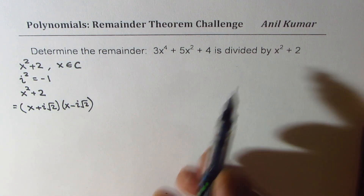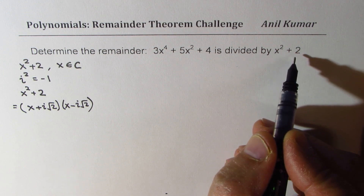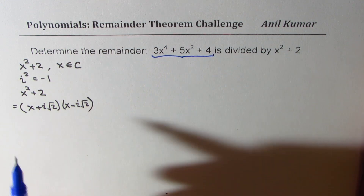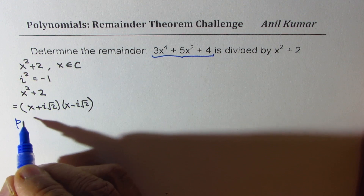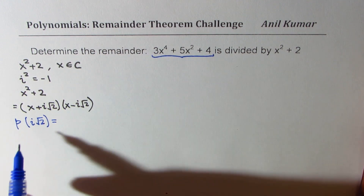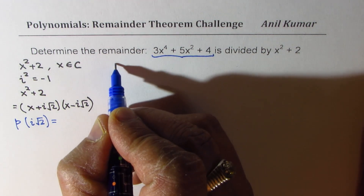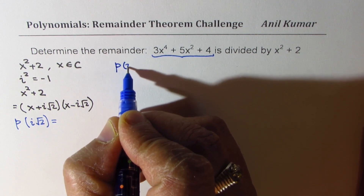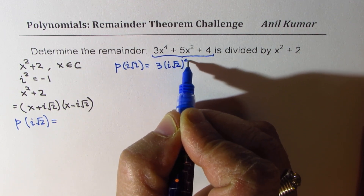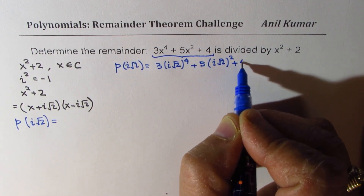So that gives you the key to our solution. These are the two factors of x squared plus 2. Now what we are trying to figure out is the value of the polynomial at i√2. So I'll substitute i√2 and find this answer. The value of the polynomial for i√2 is equal to 3 times (i√2) to the power of 4, plus 5 times (i√2) squared, plus 4.